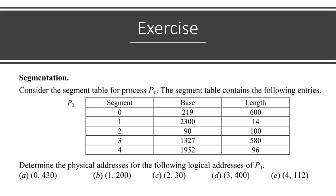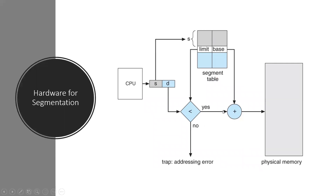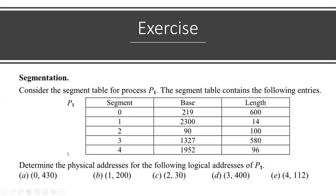The physical address is possible to assign or not — either an addressing error or a physical address is assigned. So we determine the physical address if it is possible, otherwise it is an addressing error. We check if the logical address belongs to a particular segment.